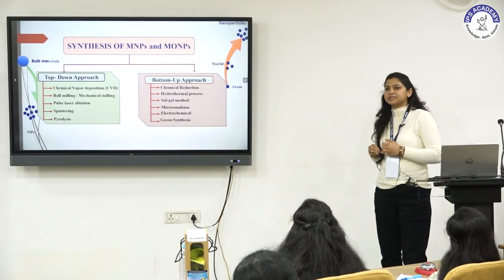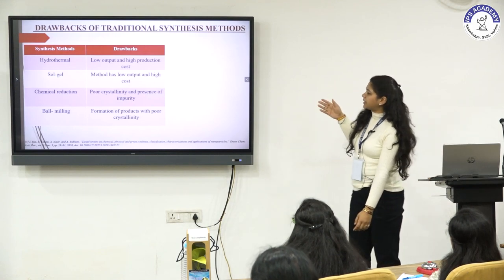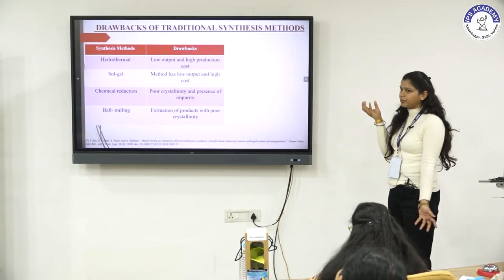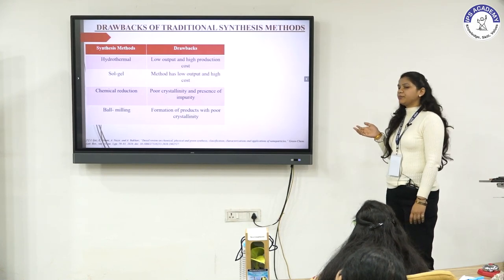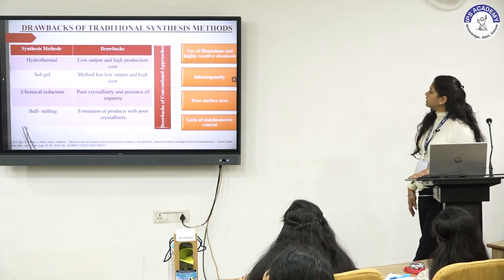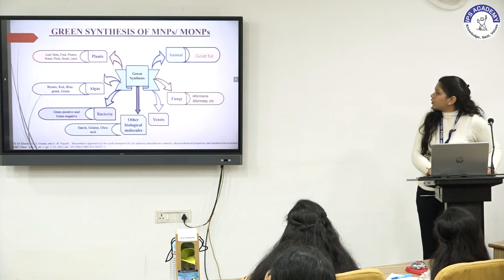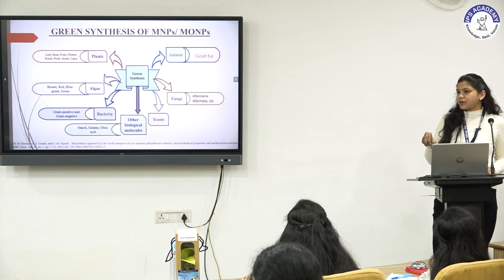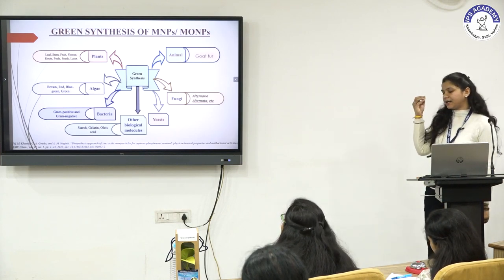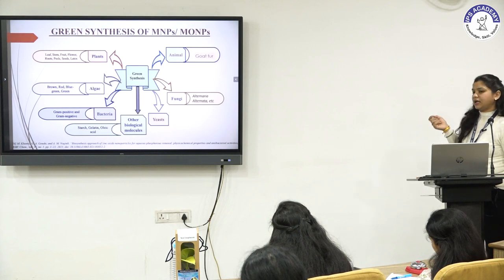All methods except green synthesis have drawbacks: hydrothermal method provides low output and high production cost; sol-gel has low output and high cost; chemical reduction has poor crystallinity and presence of impurities; ball milling produces products with poor crystallinity. Other drawbacks include use of hazardous chemicals, inhomogeneity, poor surface area, and lack of stoichiometric control. Based on these drawbacks, green synthesis approaches are now a promising method using plants, plant extracts, algae, bacteria, starch, gelatin, yeast, fungi, and animal extracts.